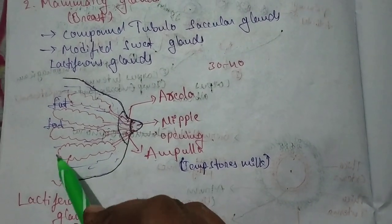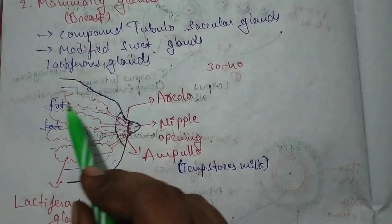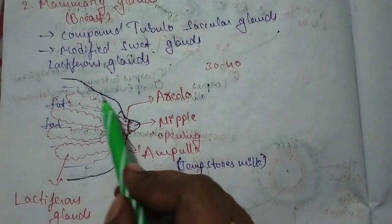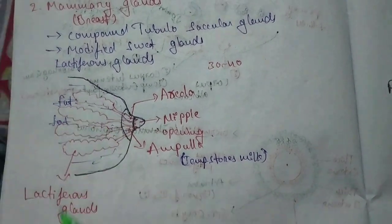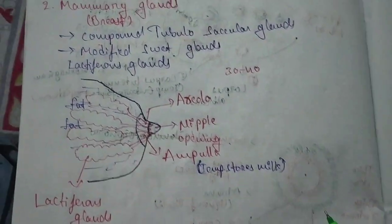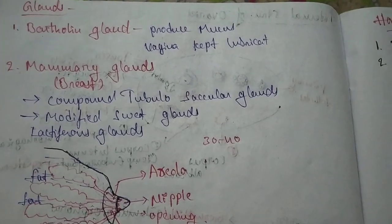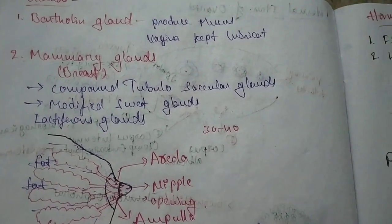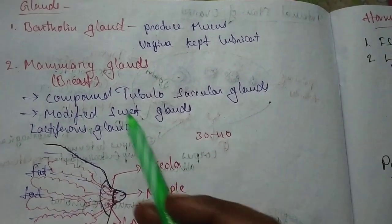The surroundings of the lactiferous glands contain fat. The surrounding area is filled with fat. These are the glands present in the female reproductive system: Bartholin glands and mammary glands.